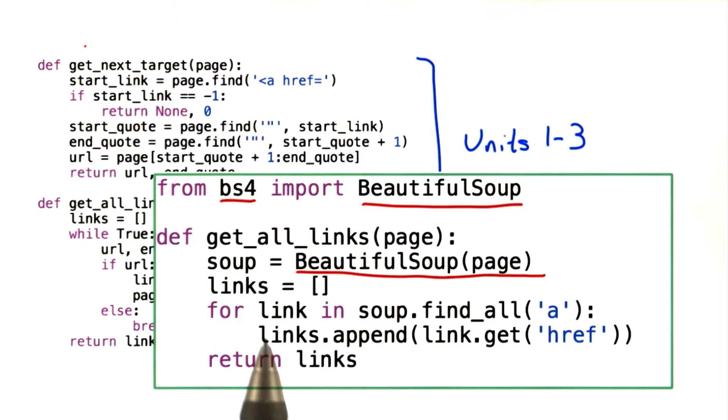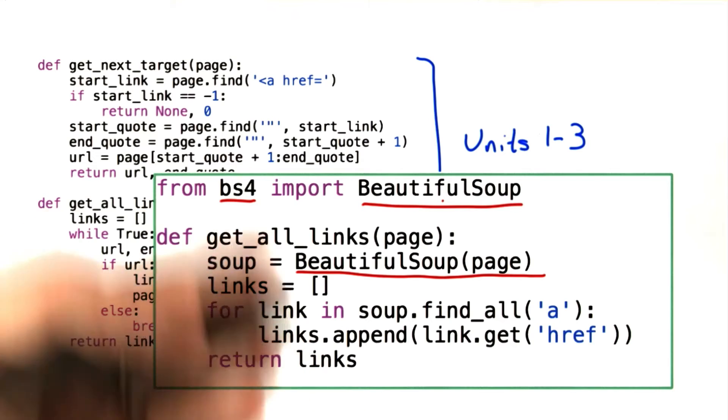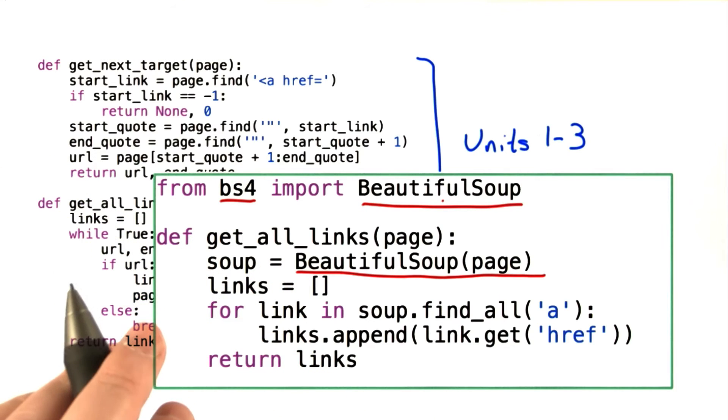In the first part of the course where we were writing this code ourselves, we wanted to really understand how to do things and our goal was to learn about programming. If you're actually trying to solve problems, you're much better off finding a module like BeautifulSoup where someone's already put a lot of effort into figuring out how to do this in the right way, and written a tool that works much more robustly on much more complex web pages than the code that we wrote does.